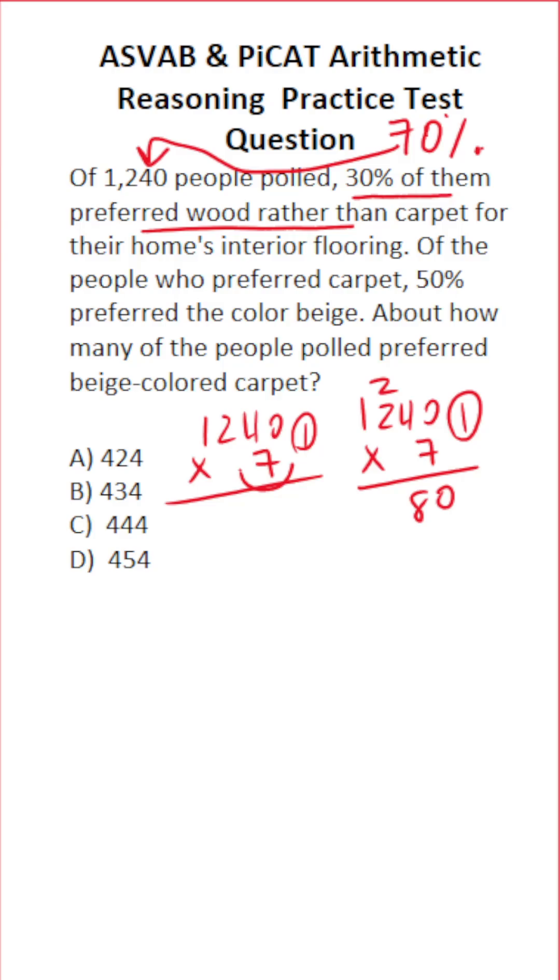7 times 2 is 14, 15, 16, carry a 1. 1 times 7 is 7 plus 1 is 8. Bring our one decimal in. So 868 people preferred carpet.